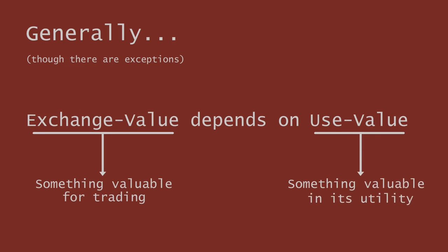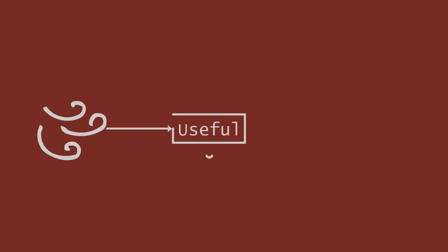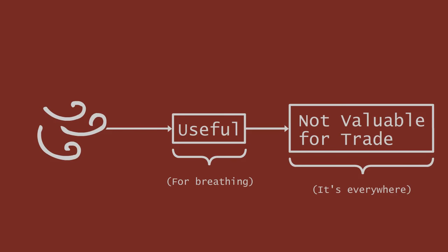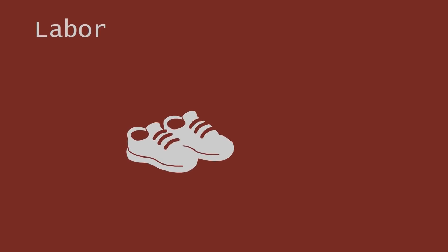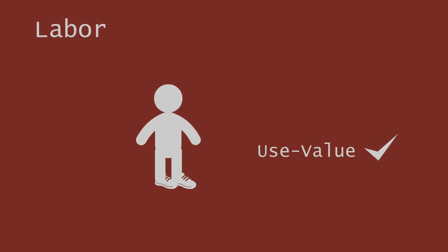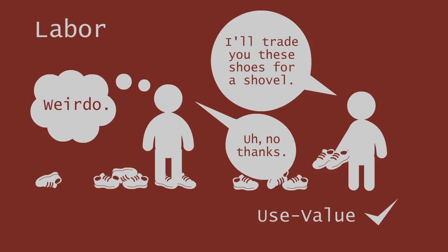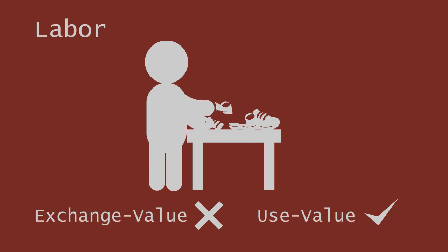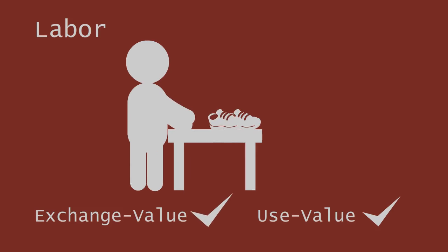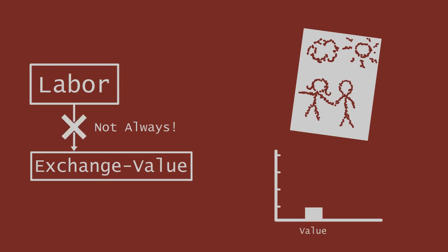However, something with Use Value doesn't necessarily have Exchange Value. Air is useful — we use it to breathe — but we do not trade for it because it is everywhere. So in addition to Use Value, there is one more variable that is critical for something to have Exchange Value, and that is labor. Shoes have Use Value because they protect our feet, but if, like air, they required no labor to get, why would you trade anything for them? No one in their right mind would, so shoes would have no Exchange Value. But we live in a world where people need to work to produce shoes, thus they are indeed valuable for trade.